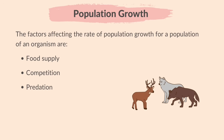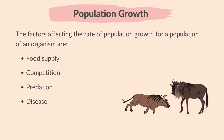Predation — organisms that have more predators will grow slower in population as they are more likely to be killed. Disease — disease can cause a drop in population by killing organisms. In crowded areas, diseases can spread fast and wipe out a large part of the population.